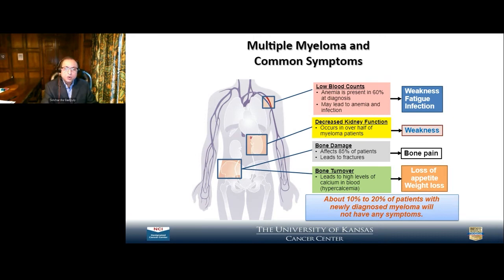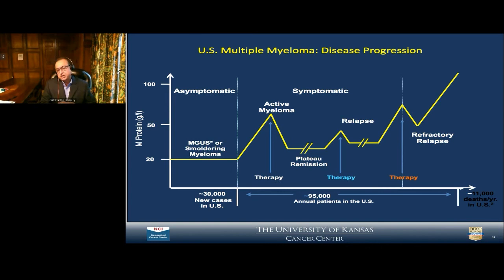In the old days, when we were in med school, there wasn't much treatment and multiple myeloma used to be fatal within two and a half to three years. Now we've made a lot of progress and many patients with multiple myeloma are living near-normal lives. Interestingly, the plasma cell process starts years before it becomes symptomatic.